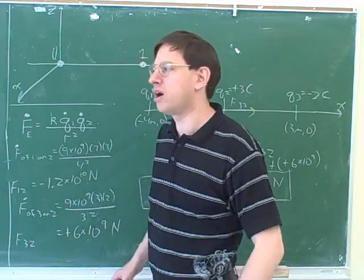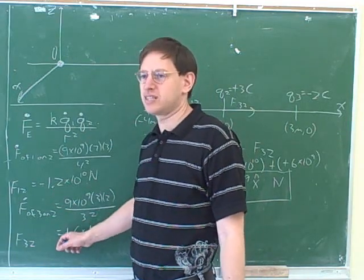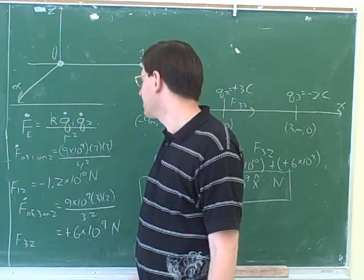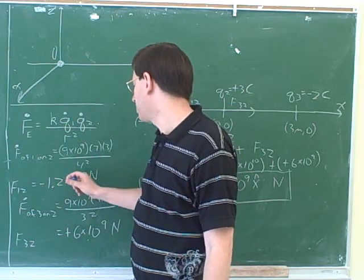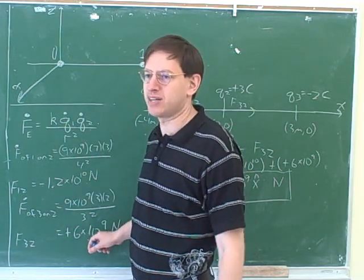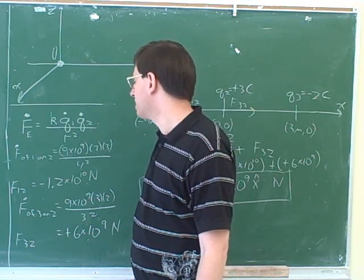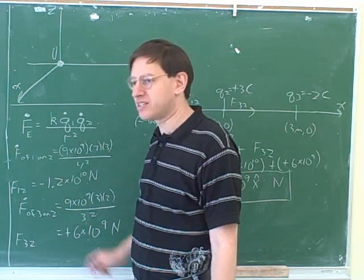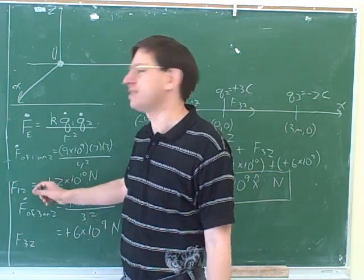So how do people tend to get this wrong? The biggest mistake is forgetting to put in the signs. By far the biggest mistake is just figuring out the magnitudes. Probably most students here would just add 1.2 times 10 to the 10th and 6 times 10 to the 9th. So it's crucial. Remember our whole approach here is that the formula gives us the magnitude, and we are responsible for the signs.